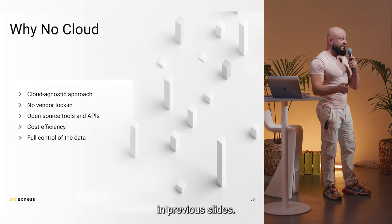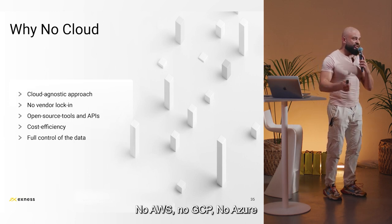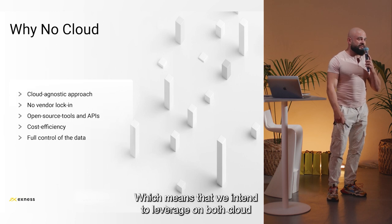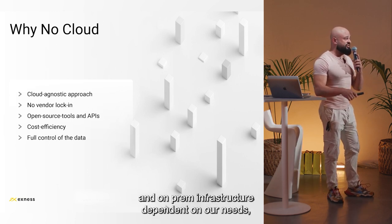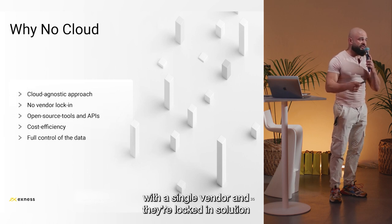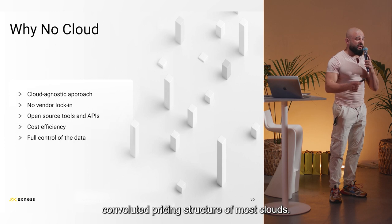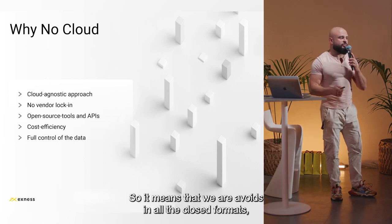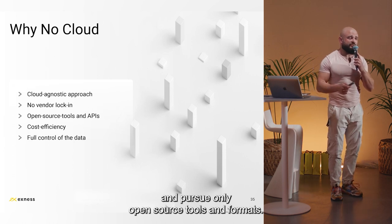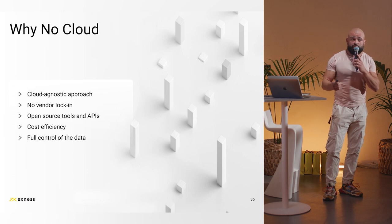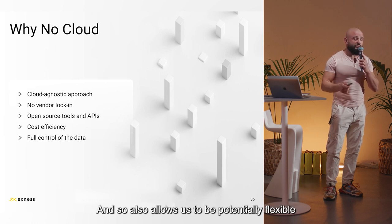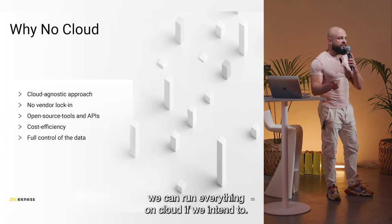You may have noticed a lack of certain words in previous slides — no AWS, no GCP, no Azure. That's not a coincidence. We're pursuing a cloud-agnostic approach, which means we intend to leverage both cloud and on-prem infrastructure depending on our needs, while not being tied down to a single vendor and their lock-in solution, and while avoiding the convoluted pricing structures of most clouds. So we avoid all closed formats and proprietary APIs, and pursue only open-source tools, formats, and APIs. This helps us control our data fully and remain flexible — we can run everything on-prem or in the cloud if we choose.